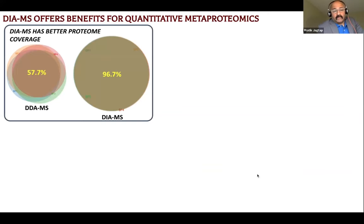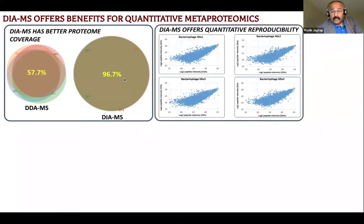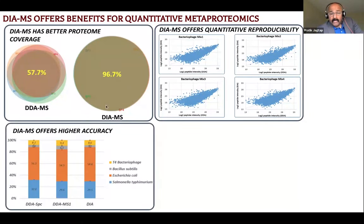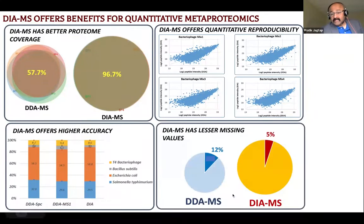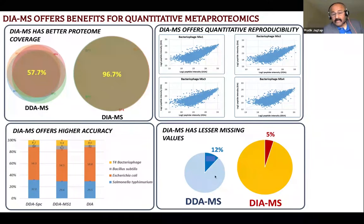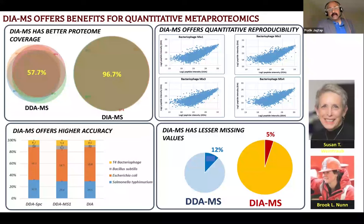Based on these datasets, we found that comparing proteome coverage — peptides present in four replicates — only 57.7% of peptides are present in all four DDA samples, while if you use DIA methods, coverage was much more impressive. We also found higher quantitative reproducibility with DIA. There was higher accuracy when looking at the biomass present in samples, far fewer missing values, and a lot more information from DIA analysis compared to DDA. We think DIA could be a method that can be used for metaproteomics as well. We worked with Sue Weintrop from the University of Texas and Brooke Nunn from the University of Washington, who had generated these datasets for our analysis.